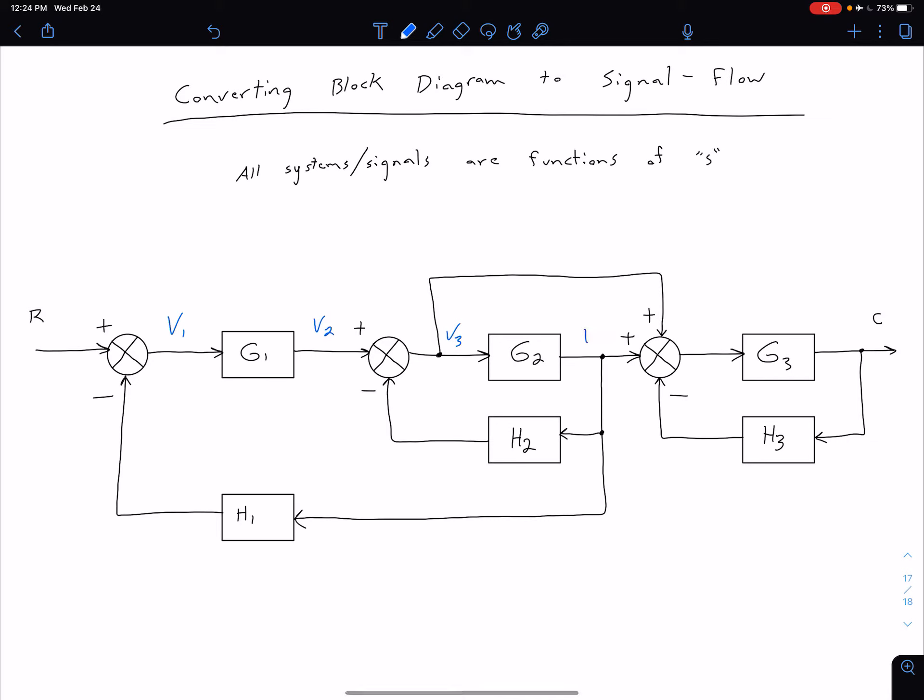On the other side of G2, we have a signal V4. On the other side of this rightmost summing junction, we have V5. On the right side of G3, we already have a signal defined as C. So that's our output.